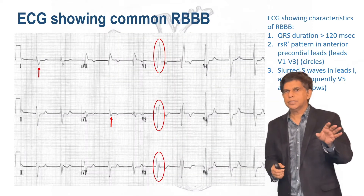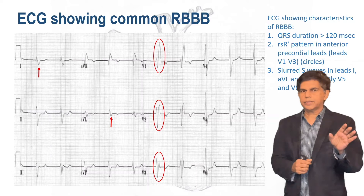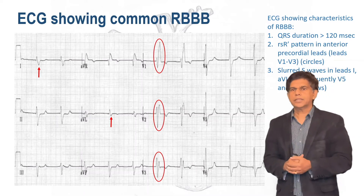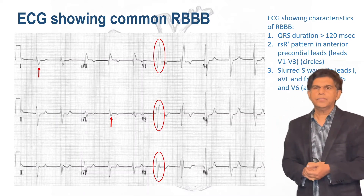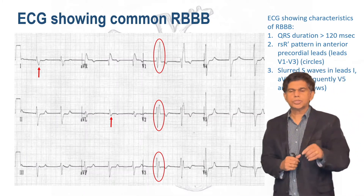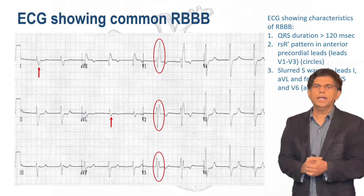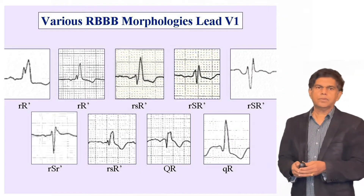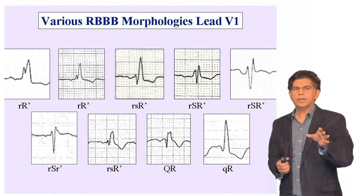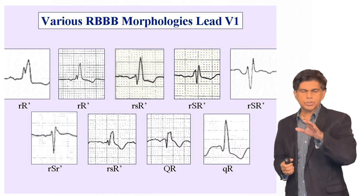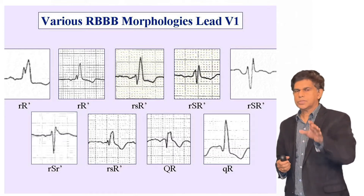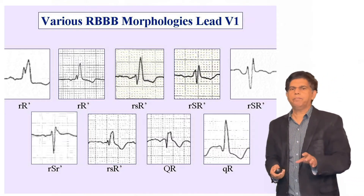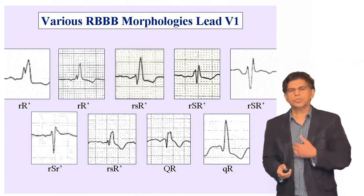Here we're showing an EKG demonstrating right bundle branch block. The first thing to look at is the QRS duration greater than 120 milliseconds. You can see the RSR prime pattern in the anterior precordial leads V1 to V3, and if you look closely, there is a slurred S wave in lead I, AVL, and leads V5 and V6. Looking at the various right bundle branch morphologies, you can remember the M pattern in lead V1 — that's one of the most important features.